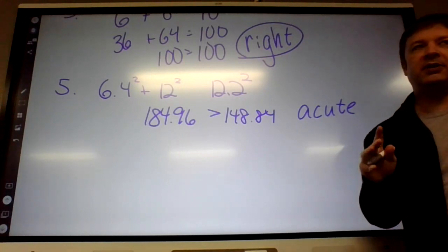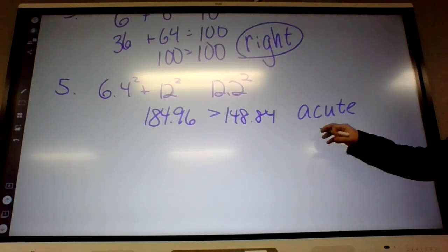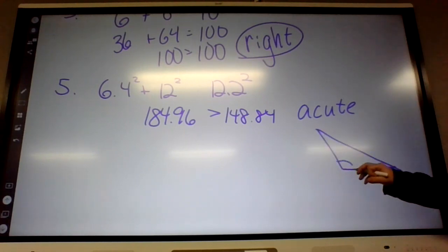So you kind of think of it relative to the C squared side. If C squared is too big, it's obtuse, because remember obtuse was a big angle? It's because on the triangle, if your hypotenuse is too big, that makes this angle big.